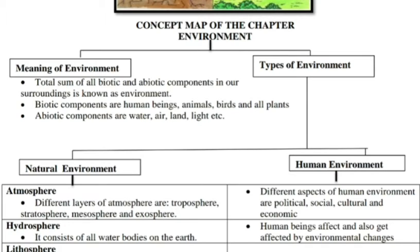Biotic components are human beings, animals, birds, and all plants. Abiotic components are air, water, land, light, etc. I hope this is very clear.